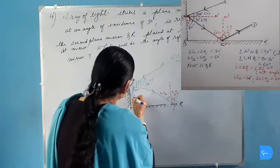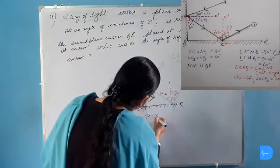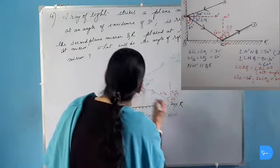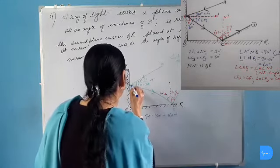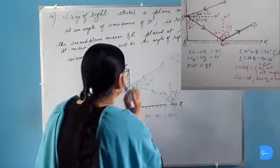So this angle will be 60 degrees. 90 minus 30 is equal to 60 degrees. Thus the remaining angle of the normal with the mirror is 60 degrees.